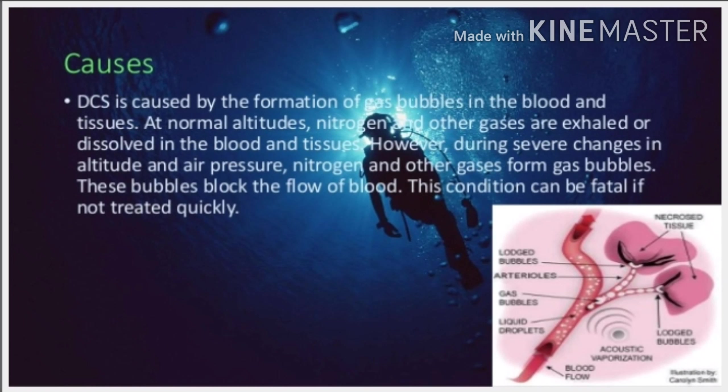At normal altitude, nitrogen and other gases are exhaled or dissolved in the blood and tissue. However, during severe changes in altitude and air pressure, nitrogen and other gases form gas bubbles. These bubbles block the flow of blood, and this condition may lead to nitrogen toxicity and may be fatal, leading to death if not properly treated. So Caisson's disease is mainly due to nitrogen toxicity.